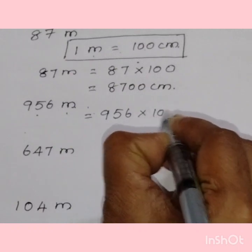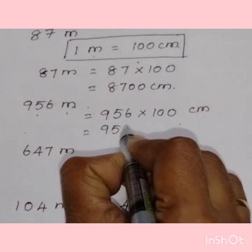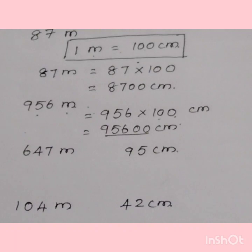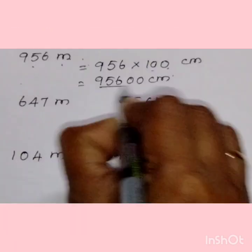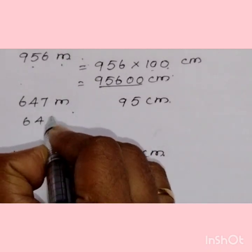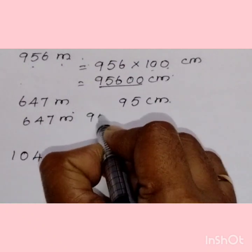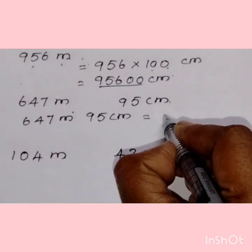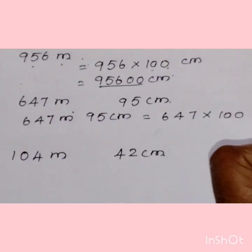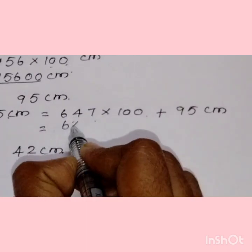Next question: 956 meters. Multiply by 100 to convert into centimeters — it becomes 95,600 centimeters. The next question has both meters and centimeters together, but we need to convert only the meters part.